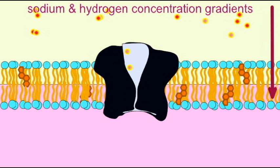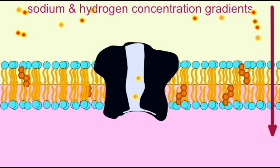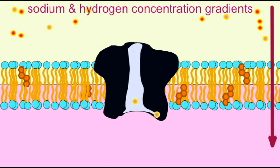So this is secondary active transport, but it is antiport because sodium and the hydrogen ions are moving in opposite directions.